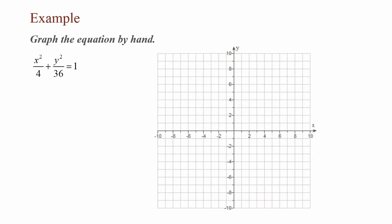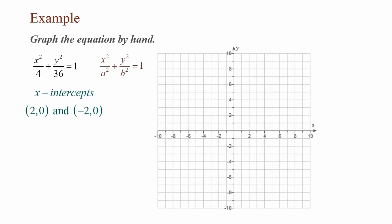In this example, graph the equation by hand: x² / 4 + y² / 36 = 1. This matches the equation x² / a² + y² / b² = 1. To graph the ellipse, I need to find the x-intercepts and y-intercepts. To find the x-intercepts, a² = 4, which means a = 2. My x-intercepts are (2, 0) and (−2, 0).